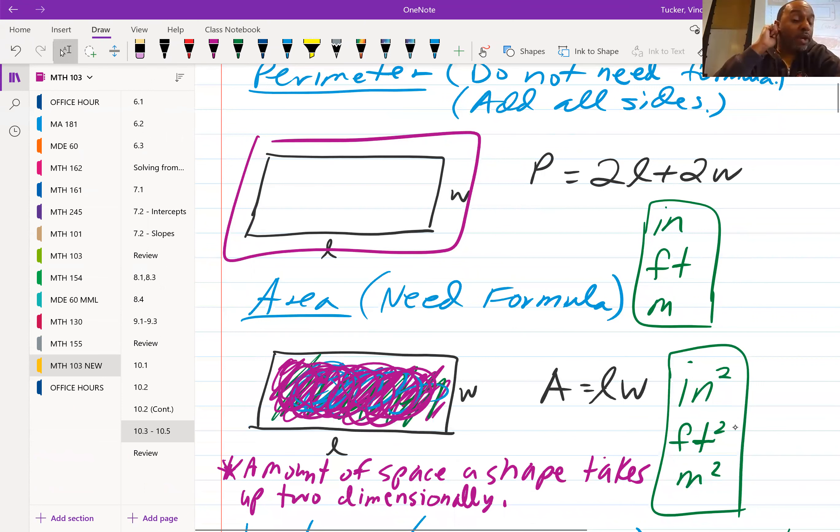Now the area, for area and volume, you will need a formula, and every shape has a specific formula that you will need. Area is the amount of space that a shape takes up two-dimensionally. So with the perimeter, we're talking about the outside, the area, we're talking about the inside.